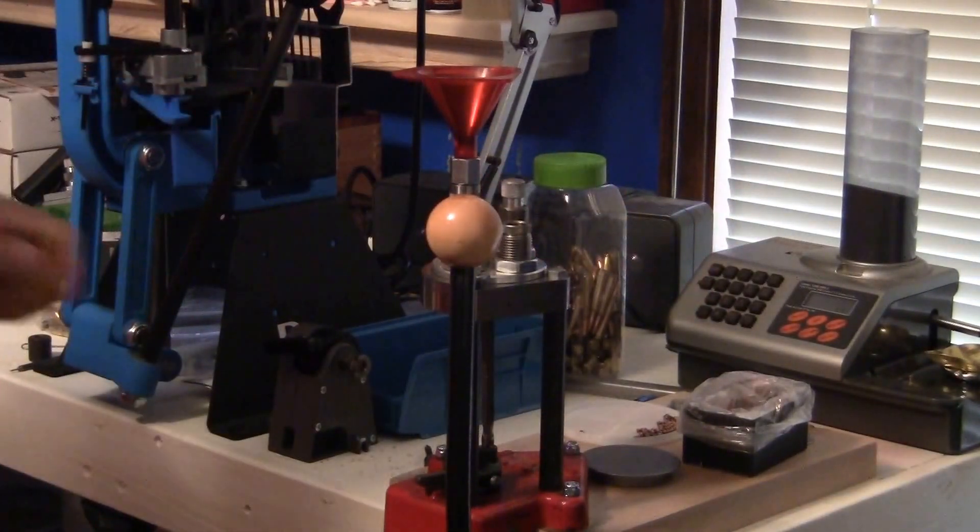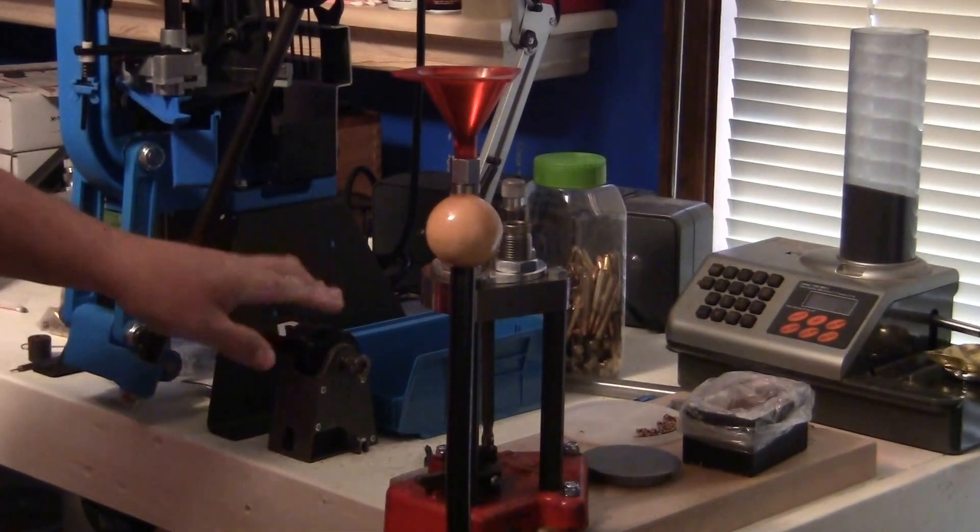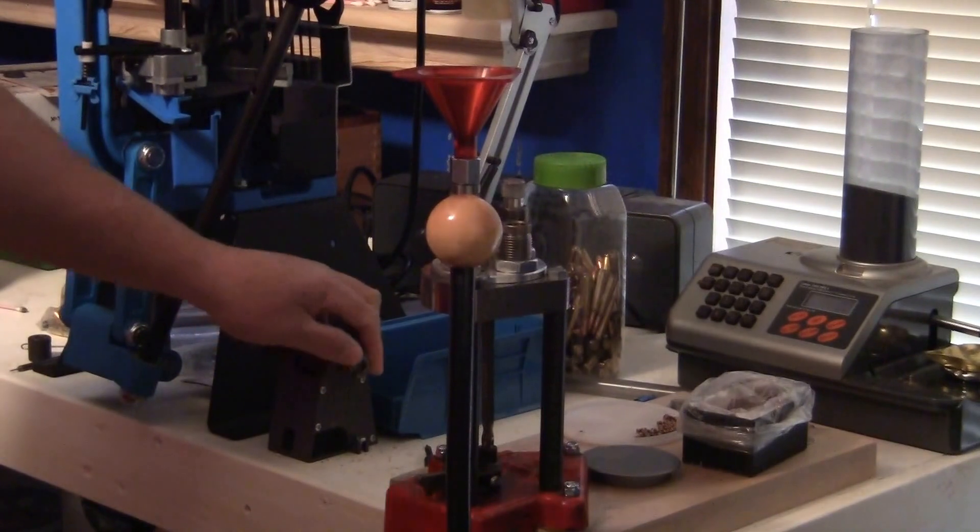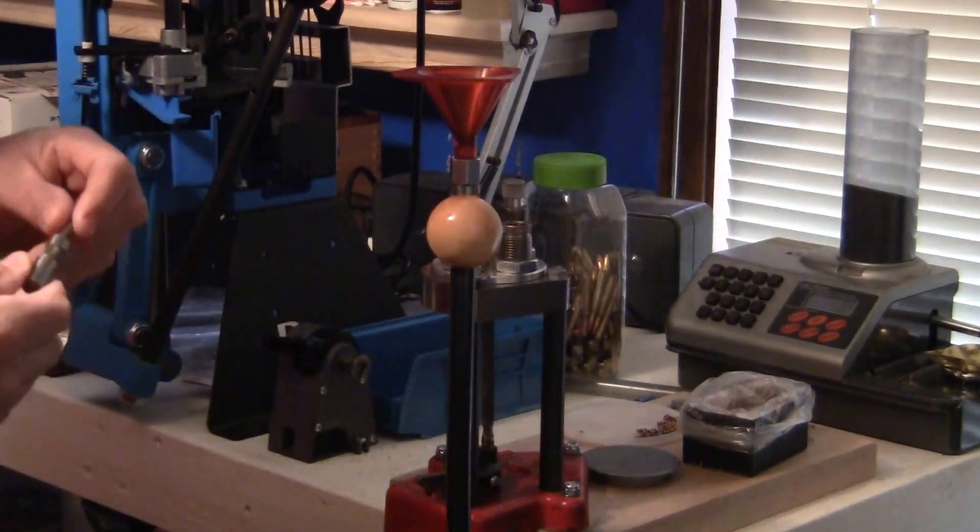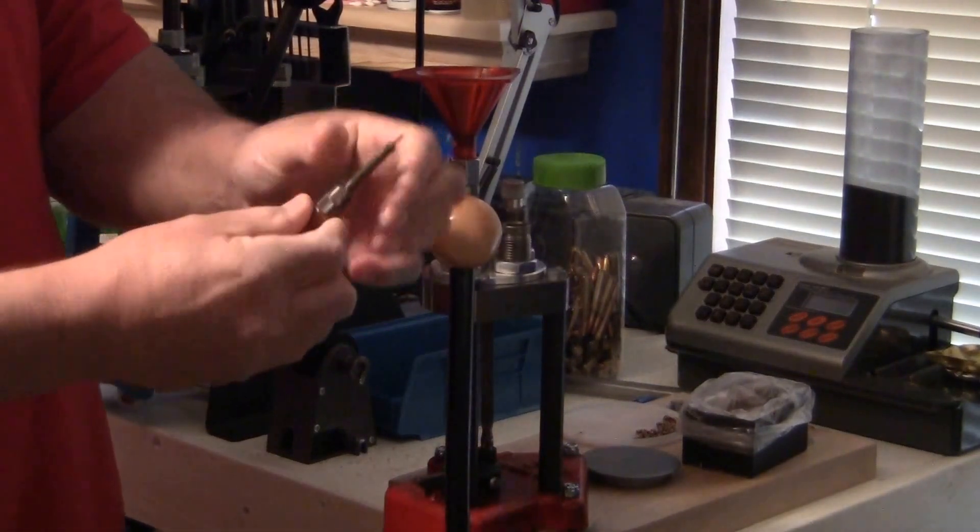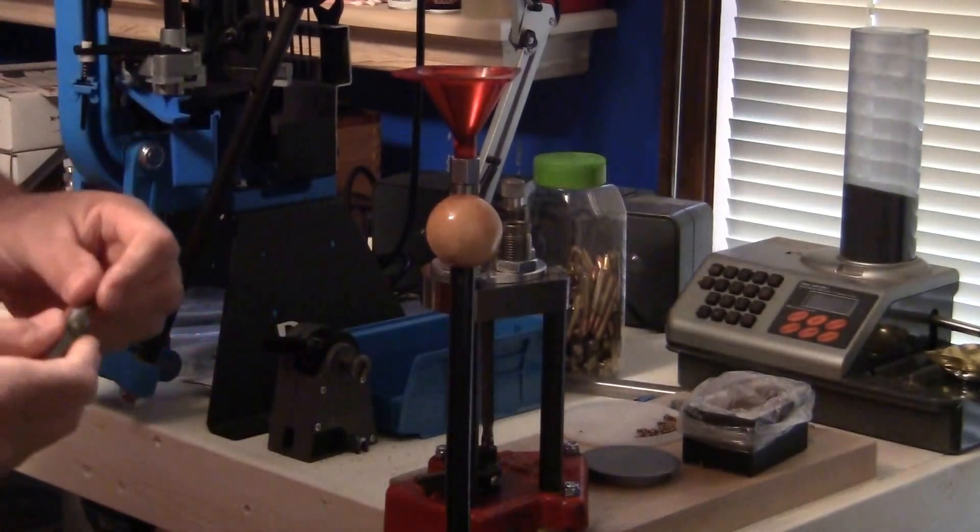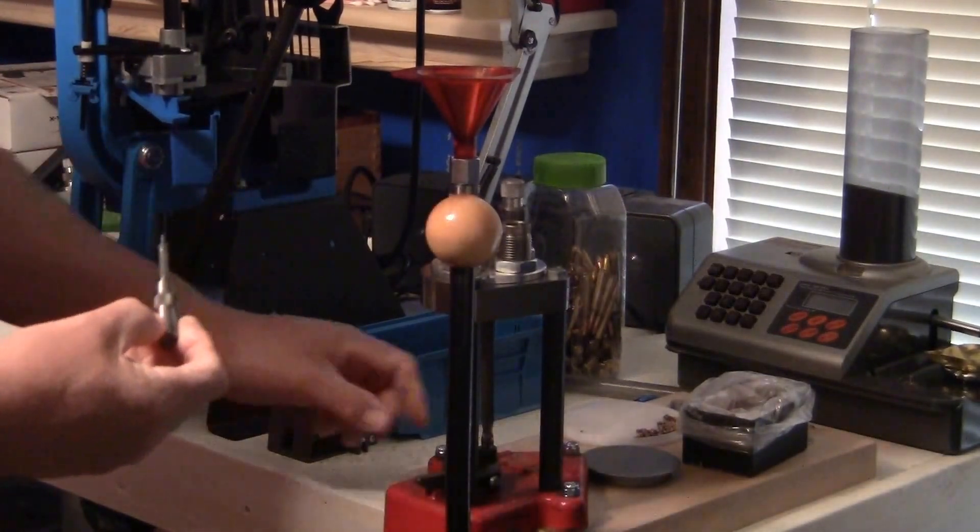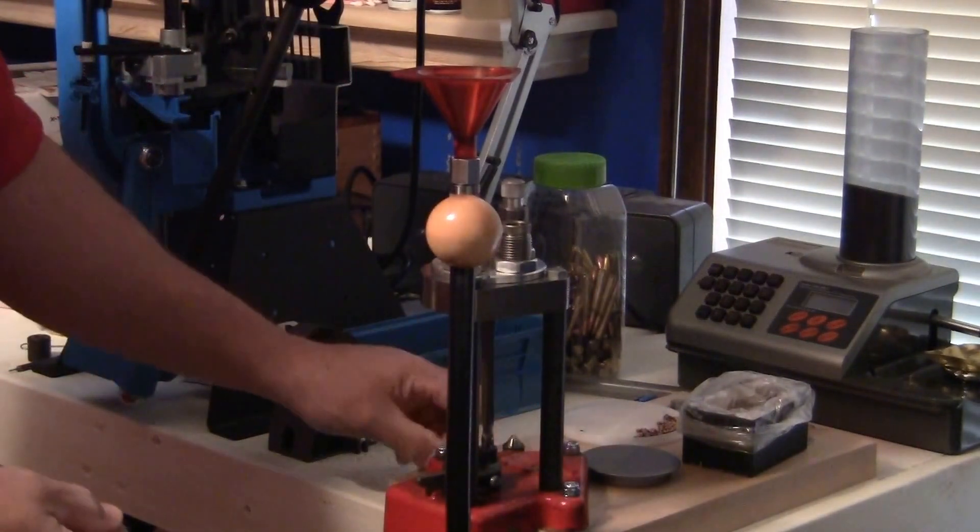I'm going to be trimming with my Lee Zip Trim. I know there's a lot more expensive stuff out there, but this thing works really well. You basically have a cutter head and a gauge. The cutter head and gauge are marked 223, so it's going to cut it back to the 223 standards. I'm going to be using a chamfer tool here.